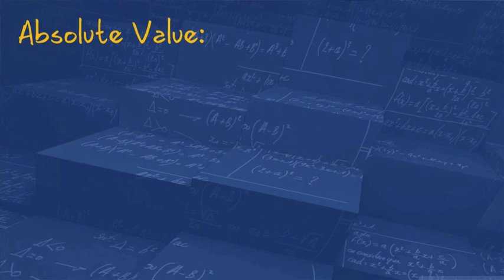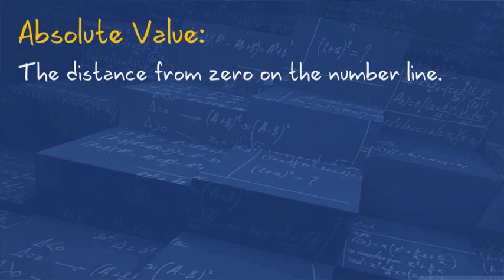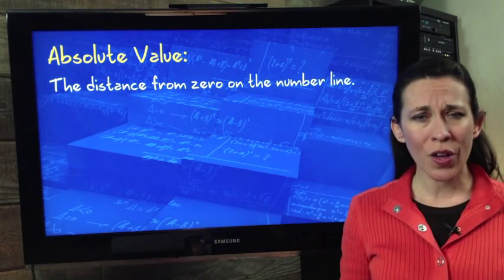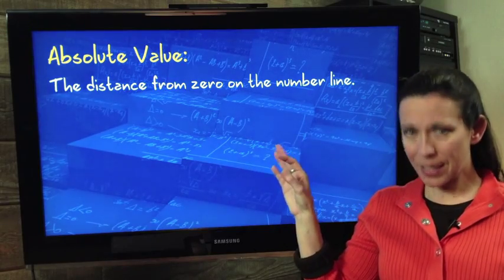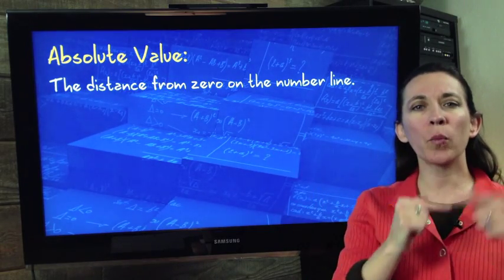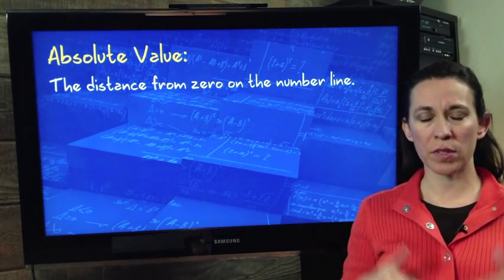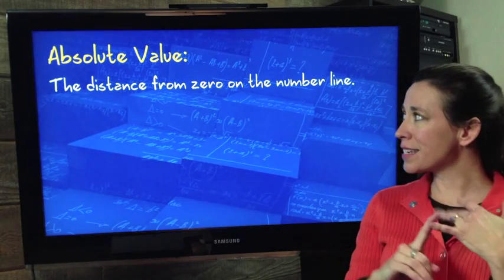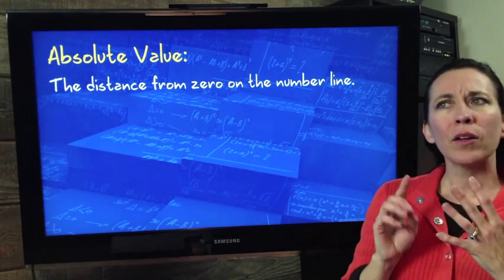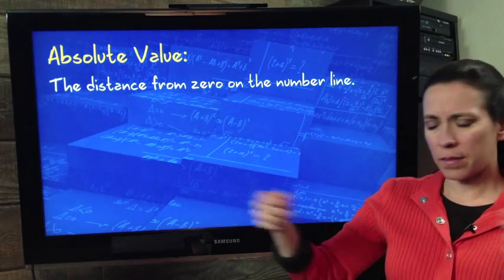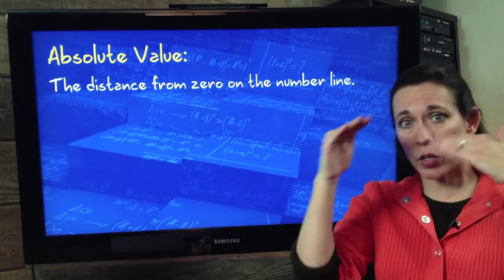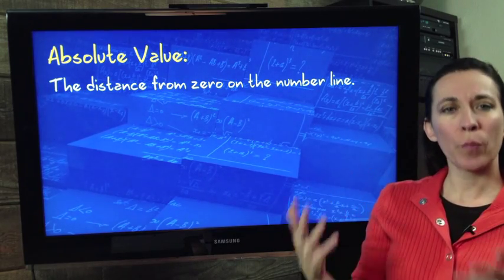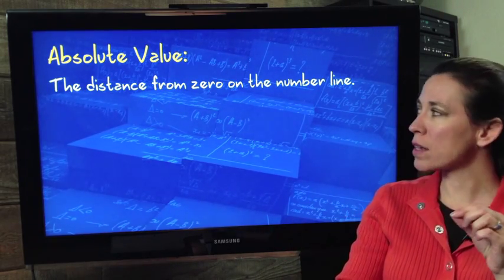Absolute value is the distance from zero on the number line. A lot of people think absolute value means it's always positive. Well, that's true, but this is why. And this is very important to remember because it's going to help you to remember how to approach these problems and how to set up your solutions. Distance from zero on the number line. Distance is always positive.